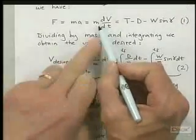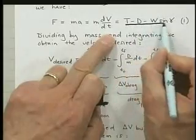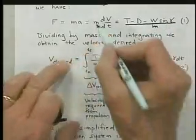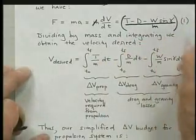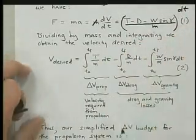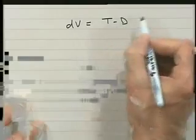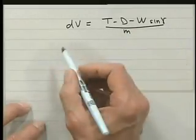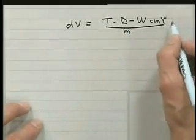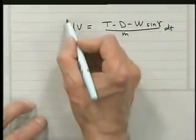If we divide the mass onto the right side here and then multiply by dt, everything on the right, then we have this equation: dv equals t minus d minus w sine gamma divided by the mass, and we multiply all of this by dt.